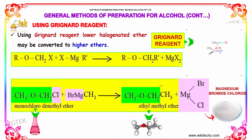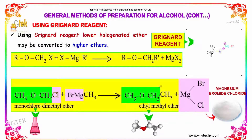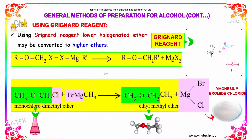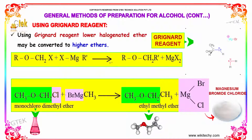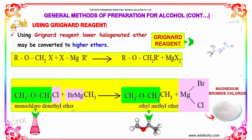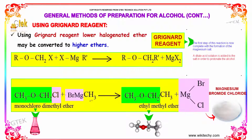Preparation of ethers using Grignard reagents: lower halogenated ethers may be converted to higher ethers. ROCH₂X reacts with XMgR' to give ROCH₂R' plus MgX₂. For example, monochlorodimethyl ether reacts with BrMgCH₃ to form ethyl methyl ether plus MgBrCl.